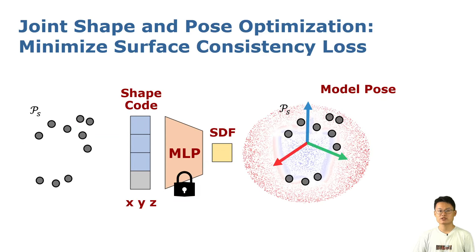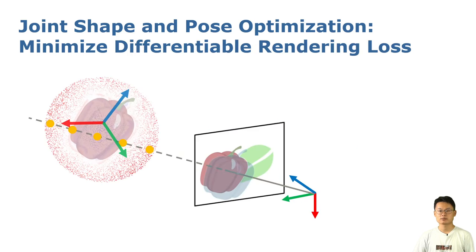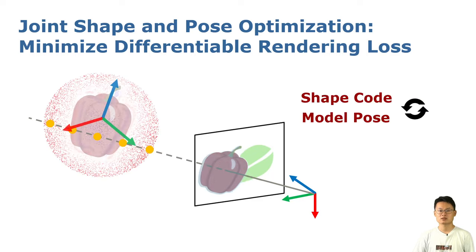With the trained DeepSDF MLP model, we try to adjust both the shape latent code and the fruit pose to let the semantic map points have an SDF prediction which is closer to zero. Then we can reconstruct the mesh from the SDF field. Additionally, we can make use of the images to minimize the difference between the rendered mask and the predicted mask, as well as the difference between the rendered depth and the measured depth, also by adjusting the shape code and pose.